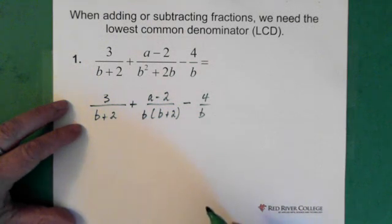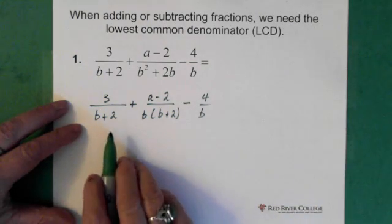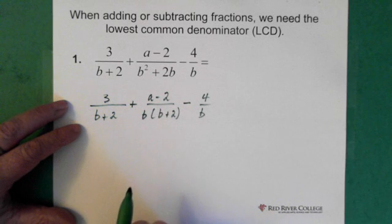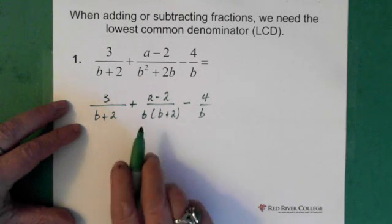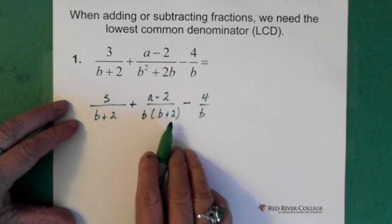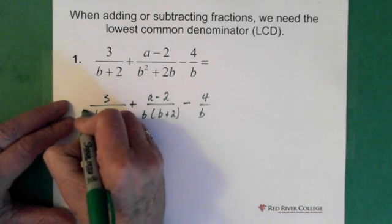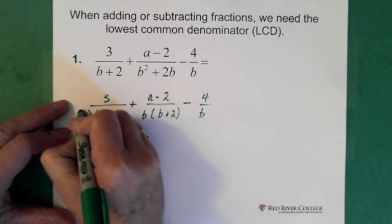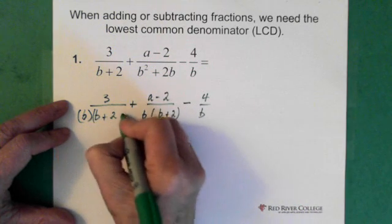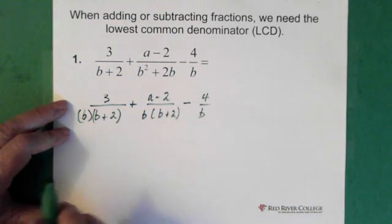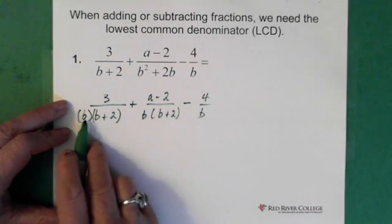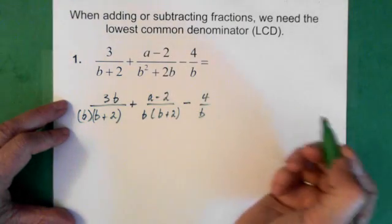So then, actually that's what I'm going to do right now, is I'm just going to change all of these so they have the same denominator. Because I know this is what we need. So then I'm going to multiply this denominator by b. Oh, wrong. Put the bracket there. But if I multiply the denominator by b, I have to multiply the numerator by b.